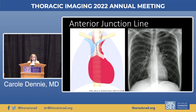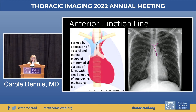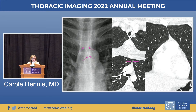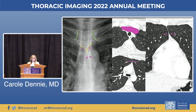Let's start with the anterior junction line. It's formed by the apposition of the visceral and parietal pleura of the anteromedial aspect of the lungs with a small amount of intervening mediastinal fat. It may look like a stripe when there's a lot of fat in the mediastinum or when there is intervening thymic tissue. We see this oblique line with a V-shape at the top where it becomes separated by mediastinal fat and great vessels superiorly. Note that it doesn't go above the clavicles.